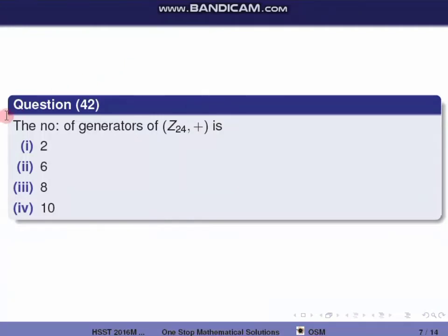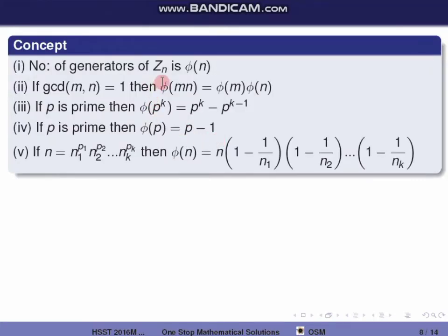Next question, question 42: The number of generators of (Z24, +). The number of generators equals φ(n), Euler's totient function. Key properties: if GCD(m, n) = 1, then φ(m·n) = φ(m)·φ(n). For a prime p: φ(p^k) = p^k - p^(k-1), and φ(p) = p - 1.